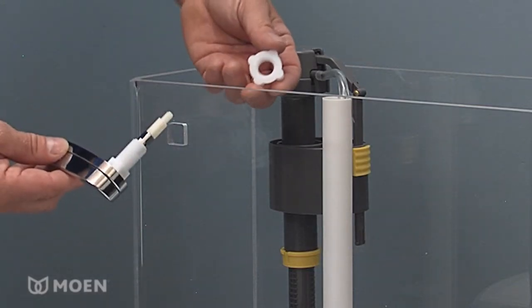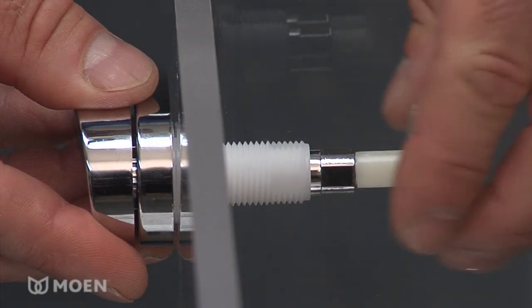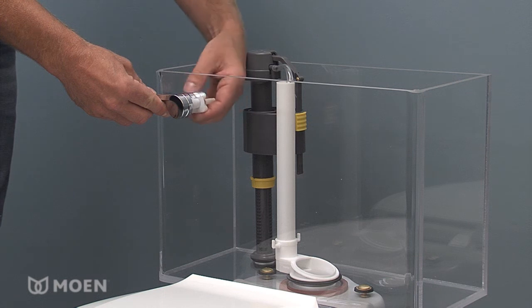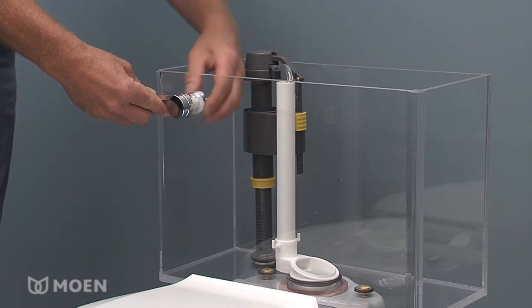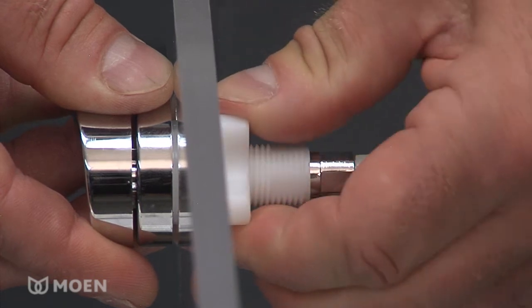Once together, insert the lever shank through the lever hole on the front of the toilet, keeping the lever facing to the left. Place the white nut on the lever shank with the flat side towards the toilet tank wall and turn the nut clockwise until it is flush and tight to the tank wall.